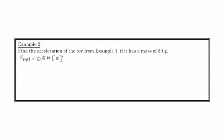All right, so here we go. Let's find the acceleration of this toy. It has a mass of 50 grams. So here was F net. We just found that in that problem, 0.5 Newtons East. We know that the mass is 50 grams. We want to use SI units, so let's convert that right away, 0.05 kilograms.